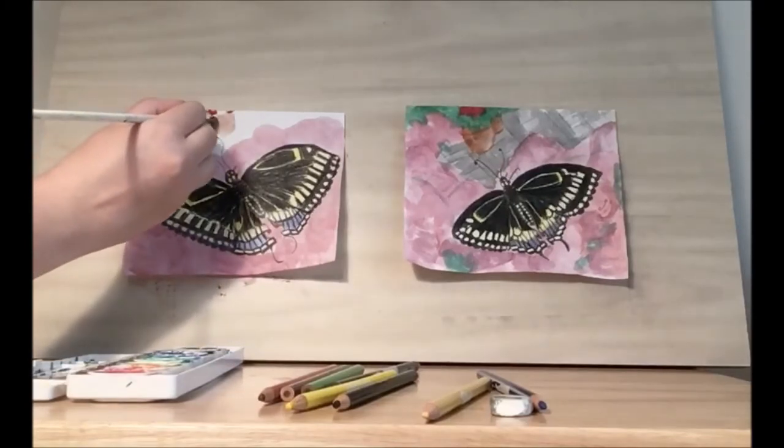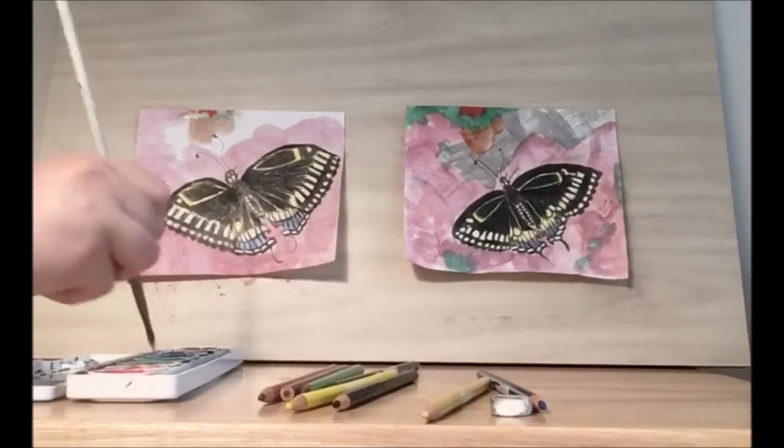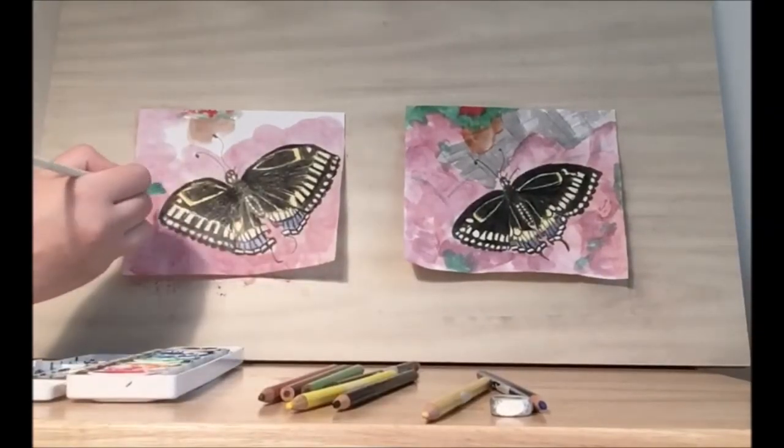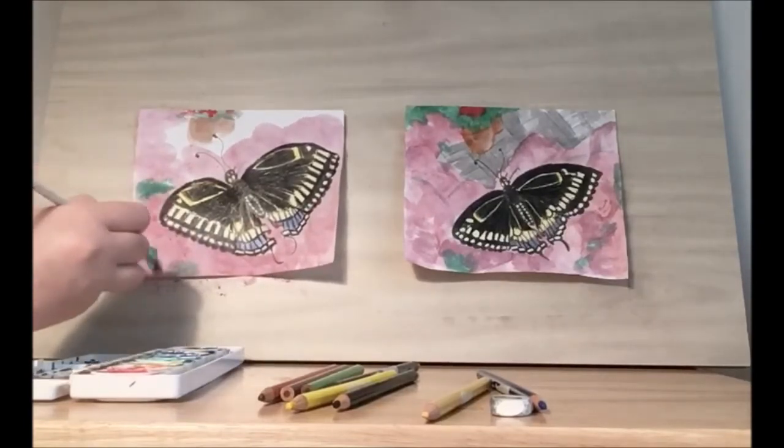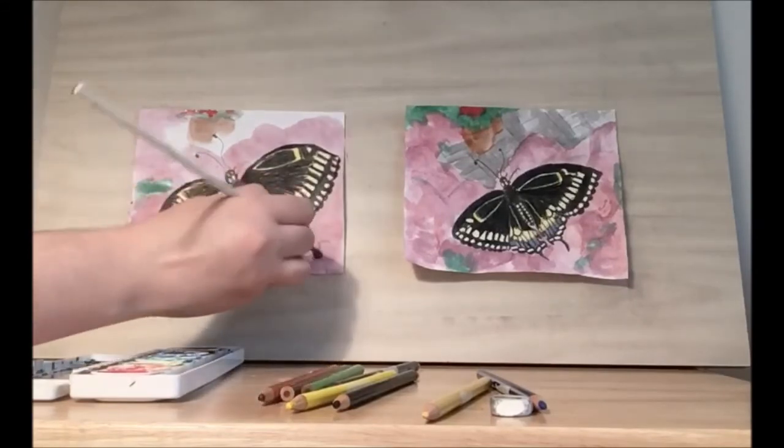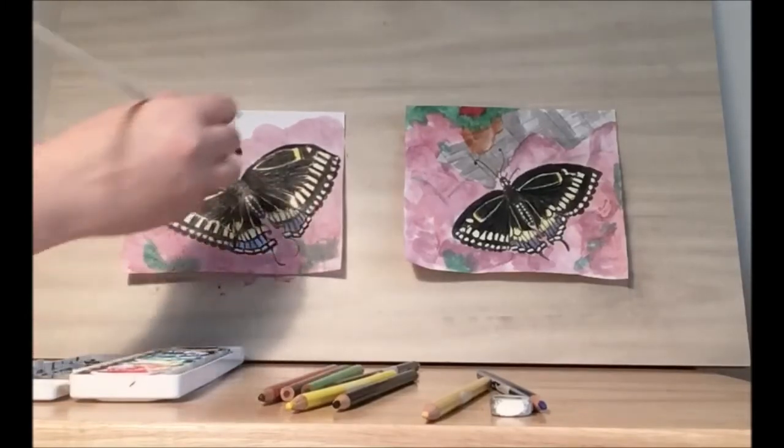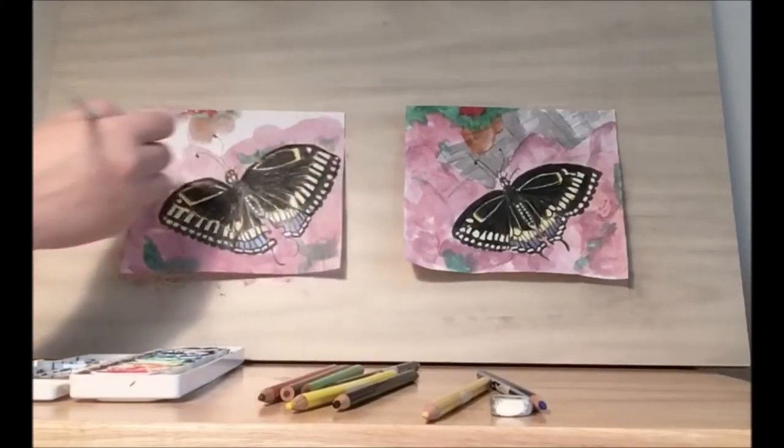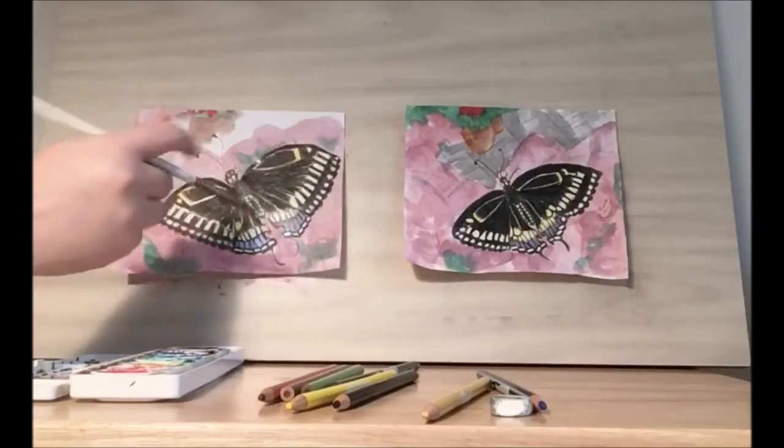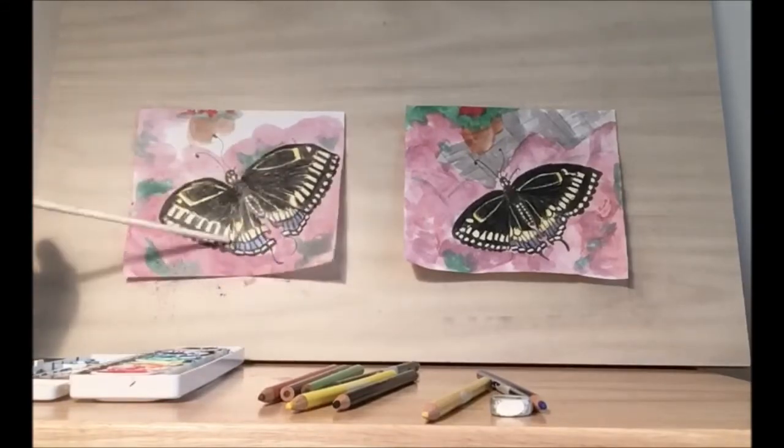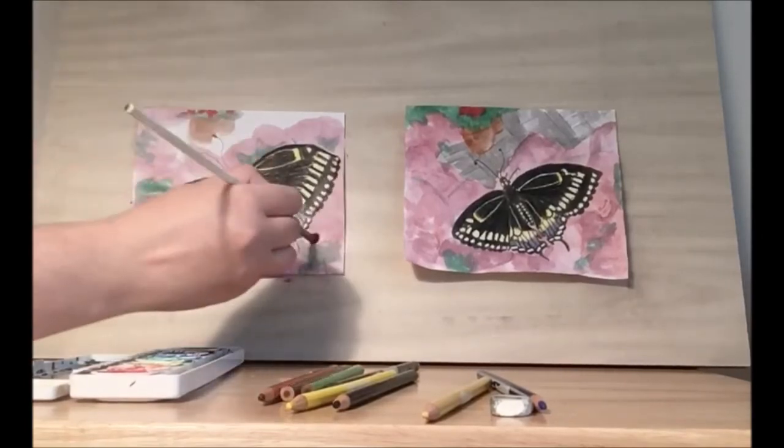And put some green for the leaves. I also added some green to my flowers that the butterfly is sitting on. These can be in any shape, just show some greenery.